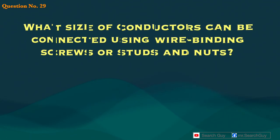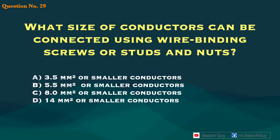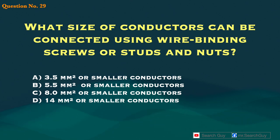Question 29. What size of conductors can be connected using wire binding screws or studs and nuts? A. 3.5 mm² or smaller conductors. B. 5.5 mm² or smaller conductors. C. 8.0 mm² or smaller conductors. D. 14 mm² or smaller conductors.